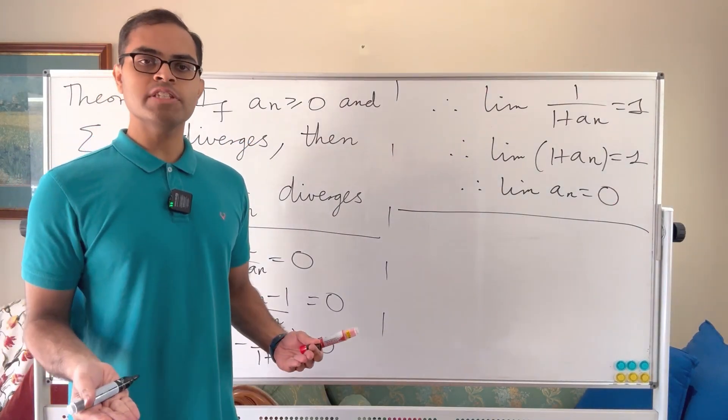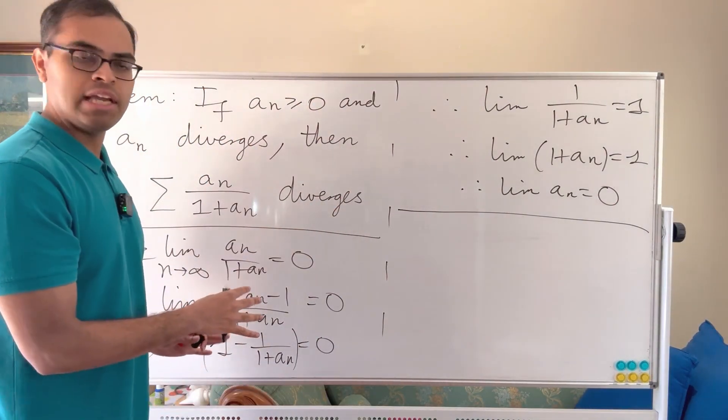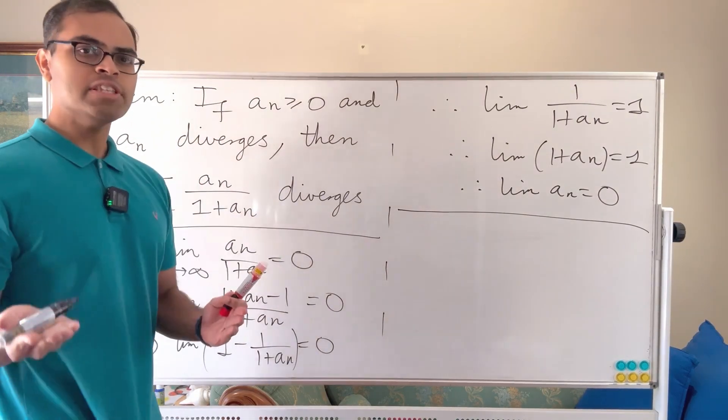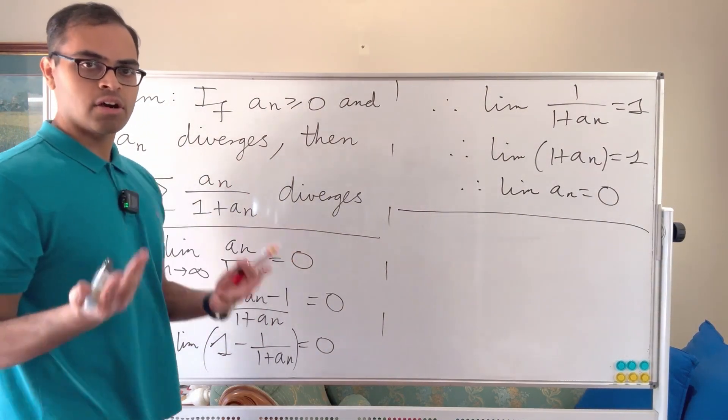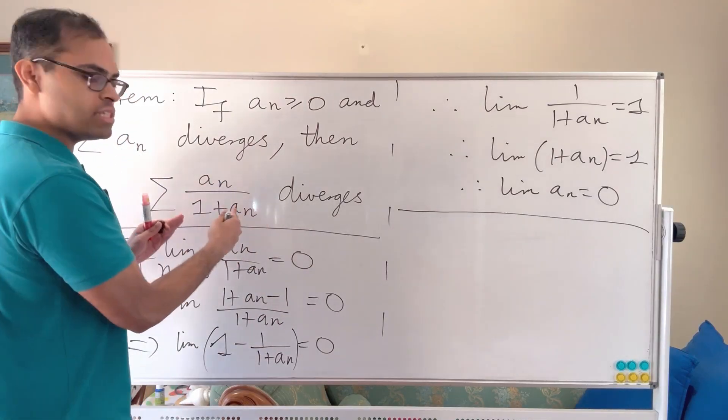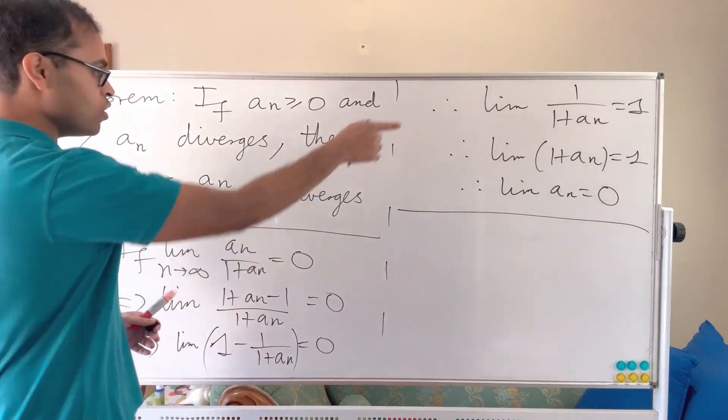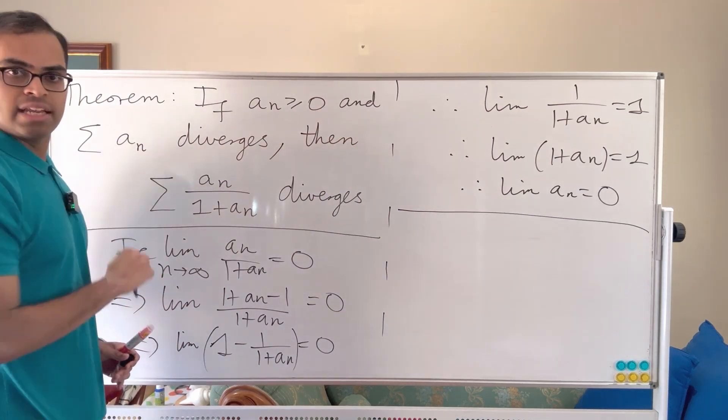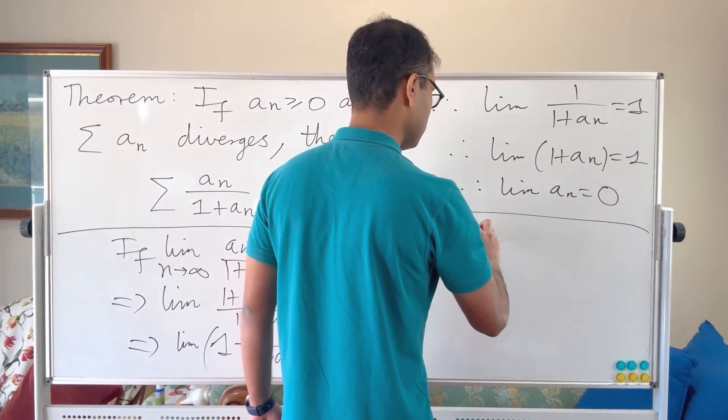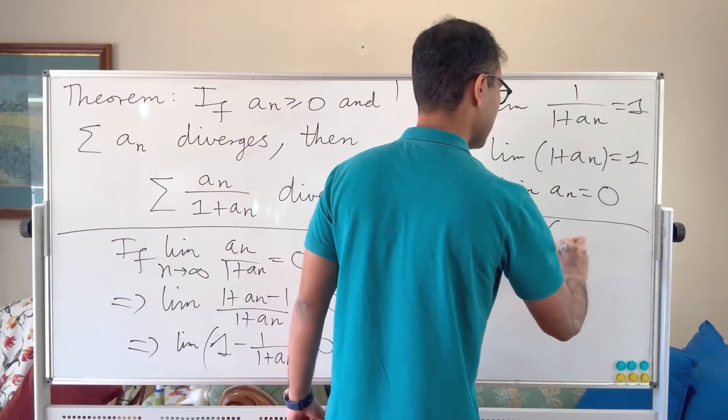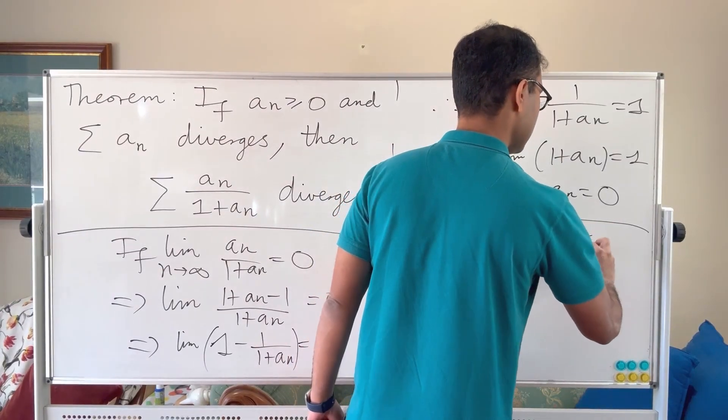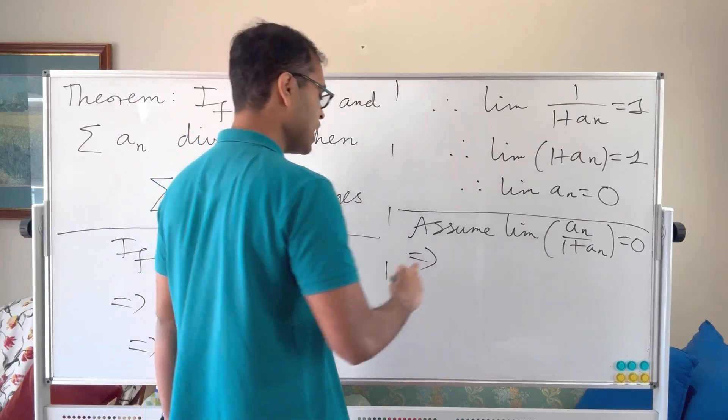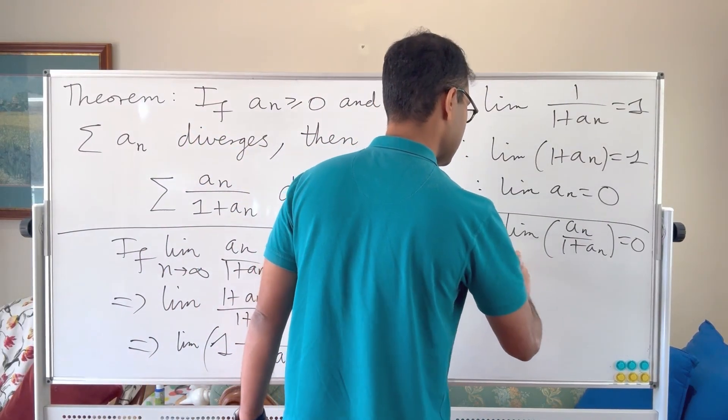Now the proof is as follows. Assume that the limit of the terms of this sequence is equal to 0, because if it's non-zero we know it diverges, that's our conclusion. So assume that the limit is equal to 0, therefore we know by this reasoning that I just gave rigorously that limit of the an is 0. So I'm going to write this as assume limit of an over 1 plus an is equal to 0, which then implies as we just explained that the limit of an is equal to 0.